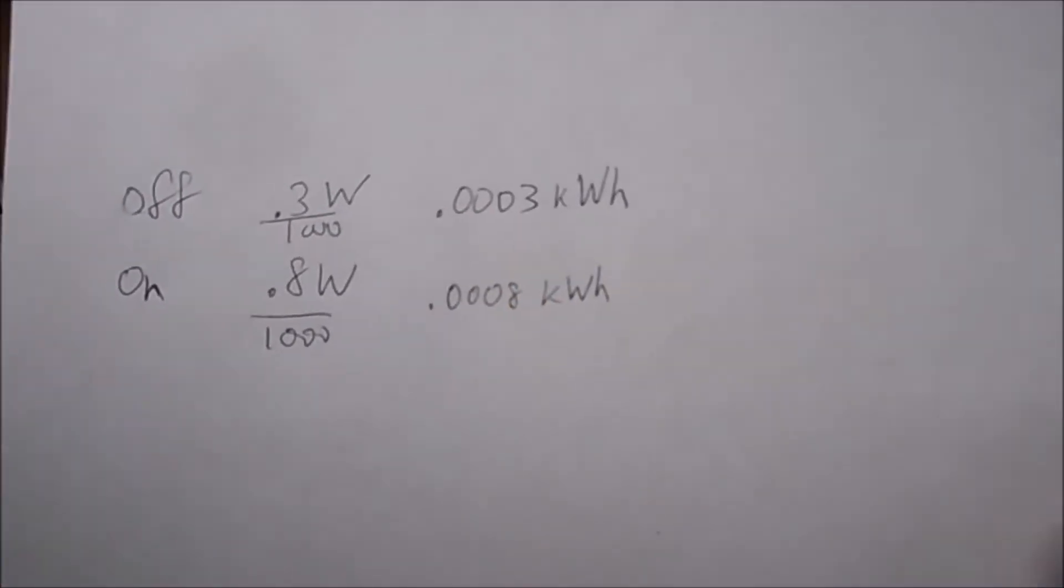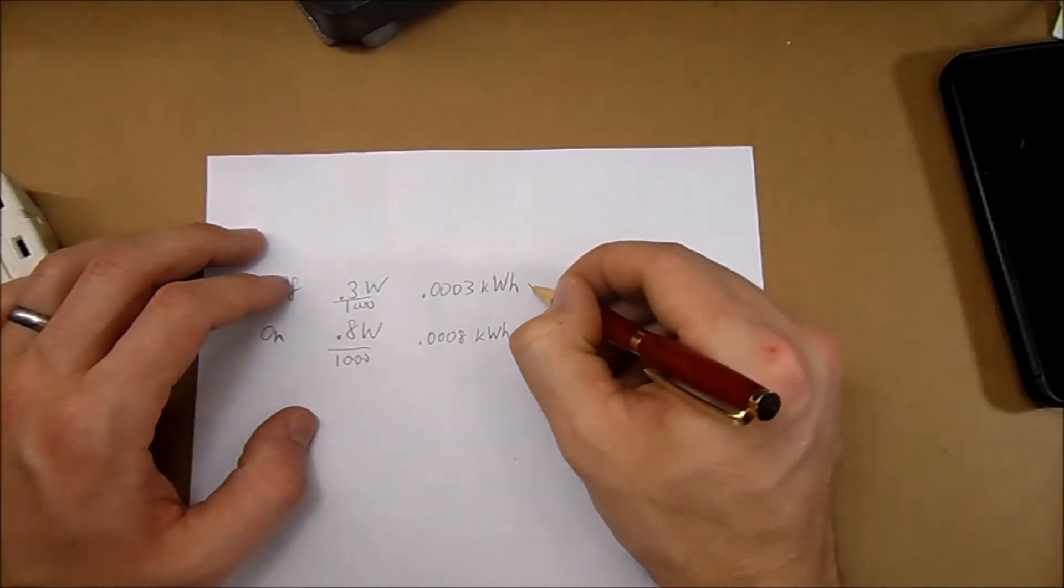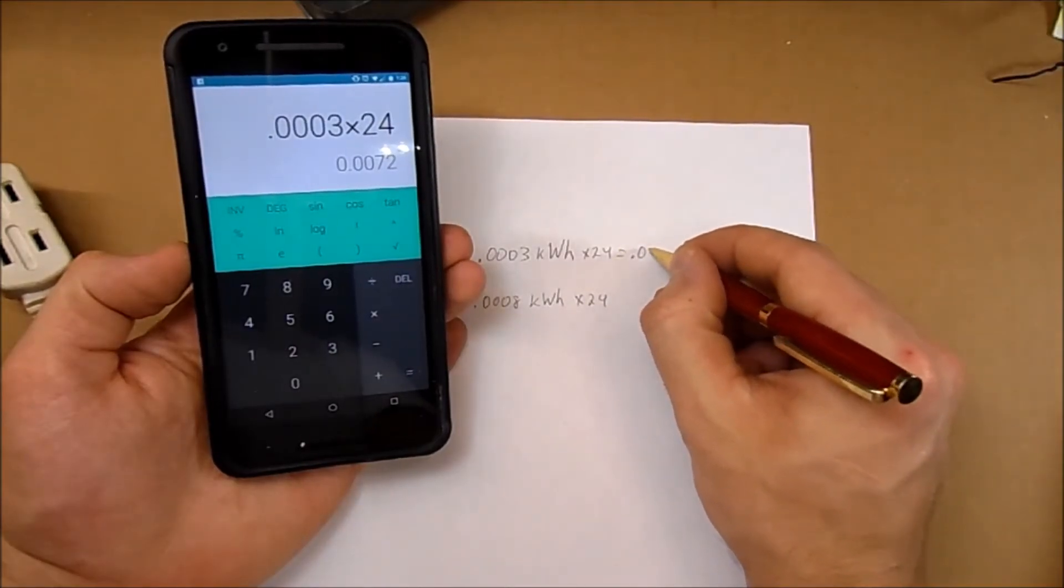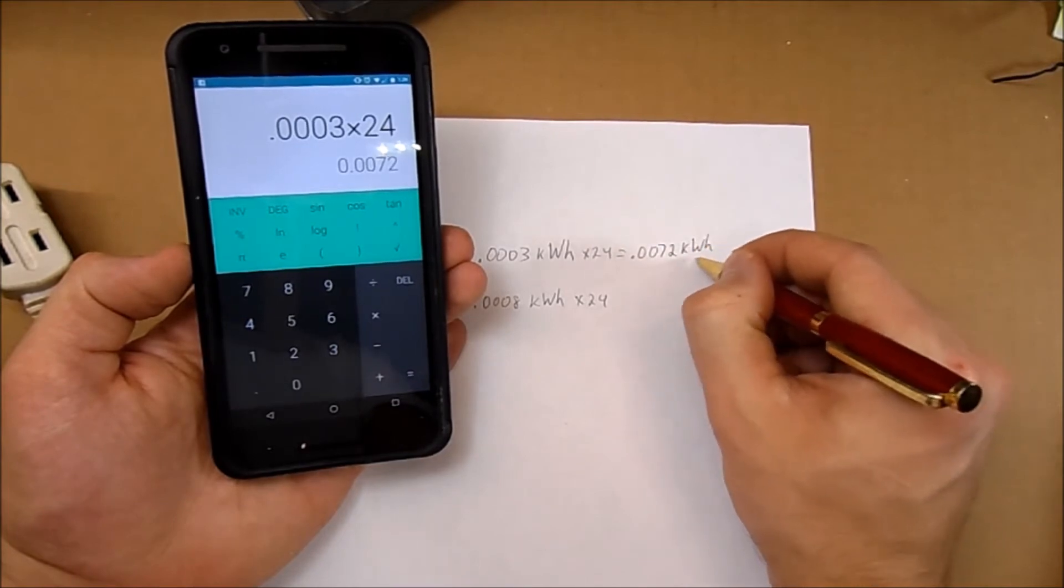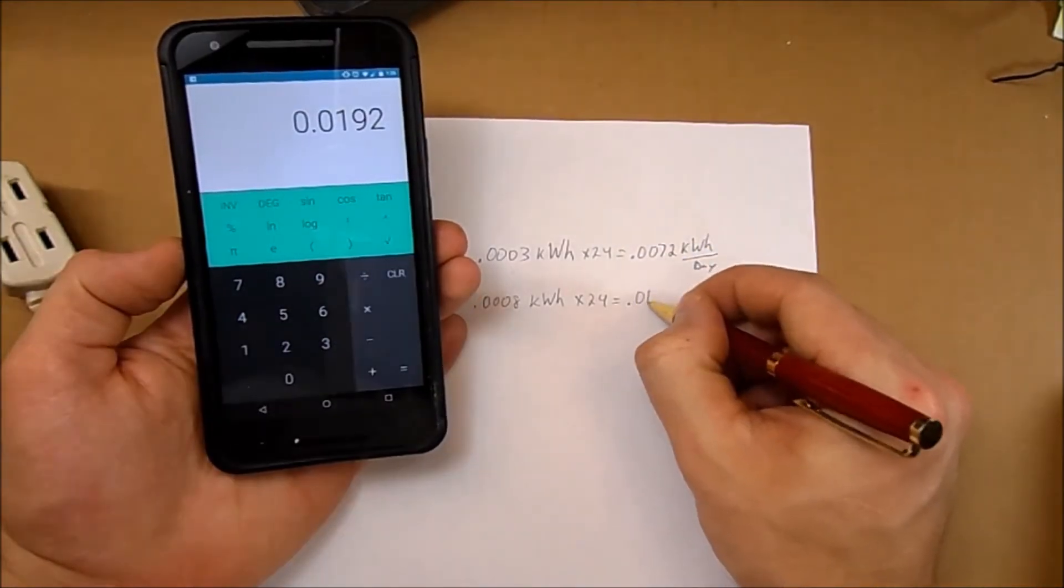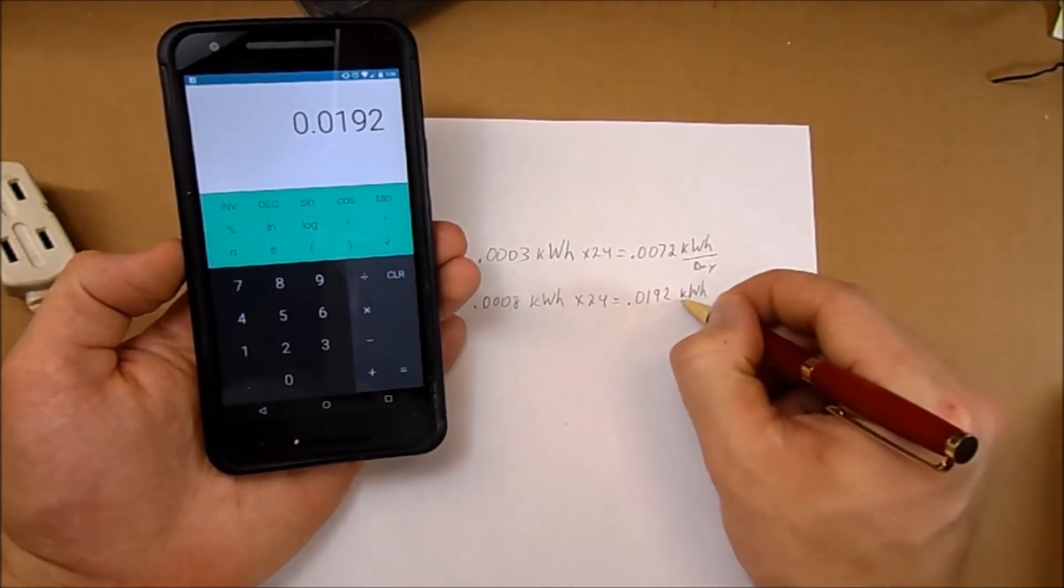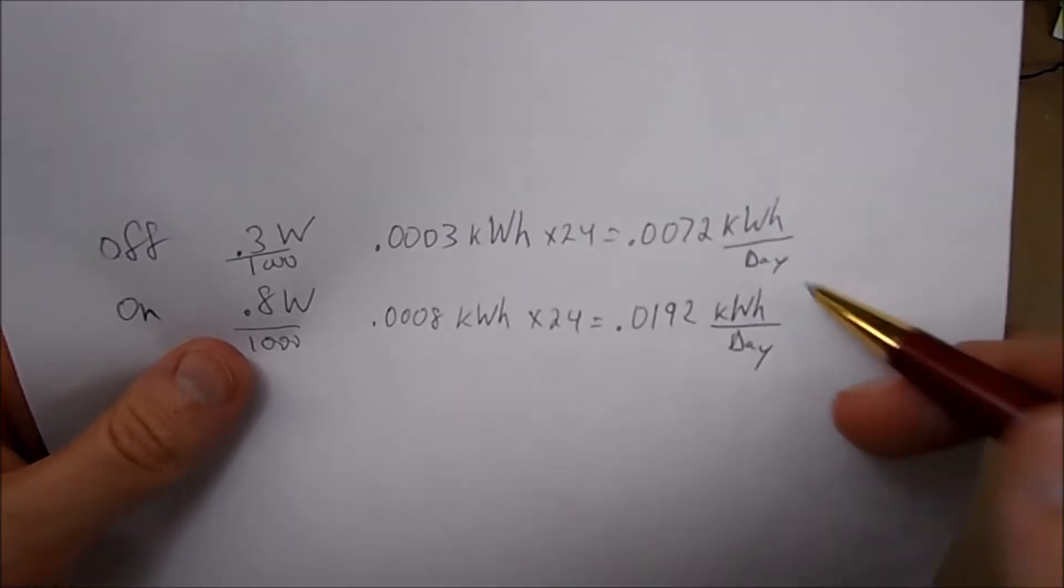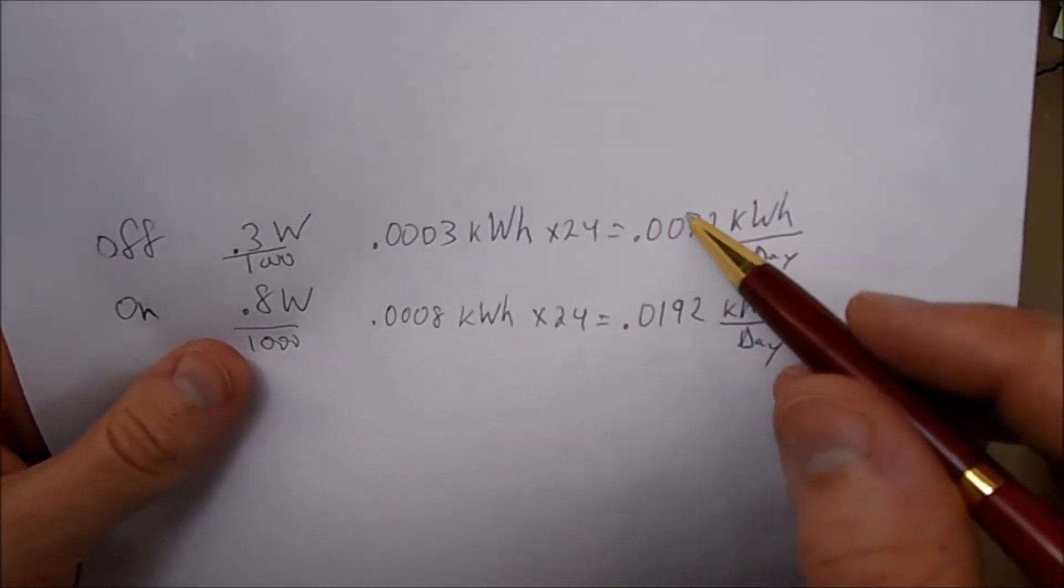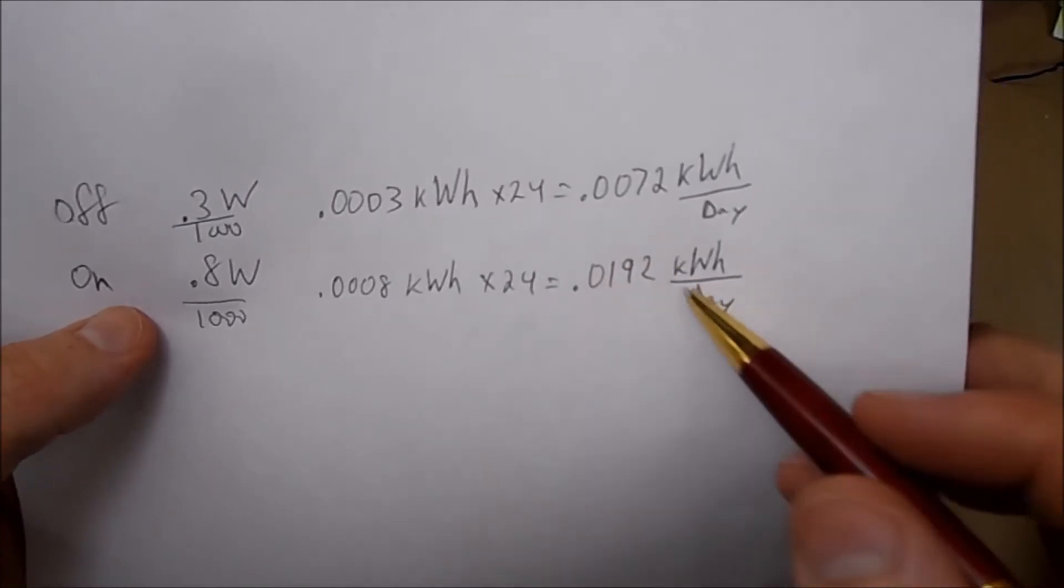If we multiply this by 24, equals 0.0072 kilowatt hours per day. 0.0192 kilowatt hours per day. So per day being in an off position all day long it would use this many kilowatt hours, and if it was left on for a whole day it would use this many kilowatt hours, not counting the load.